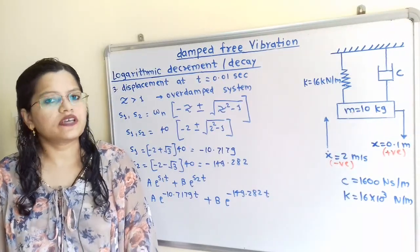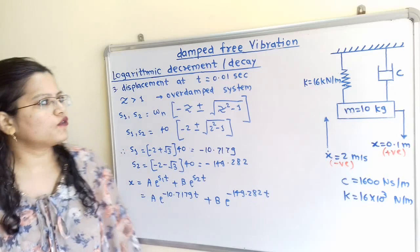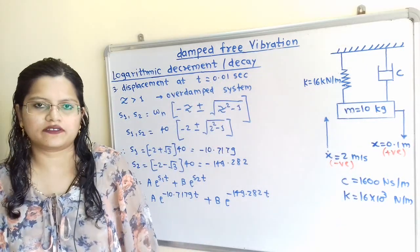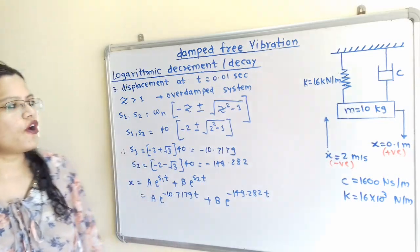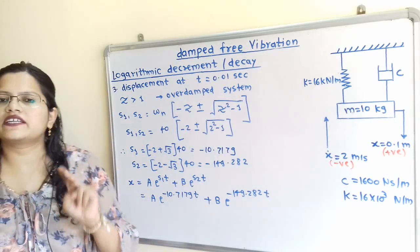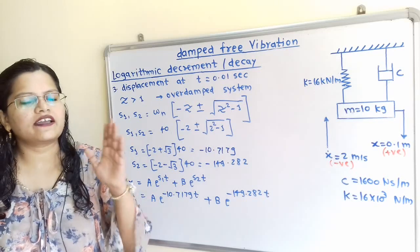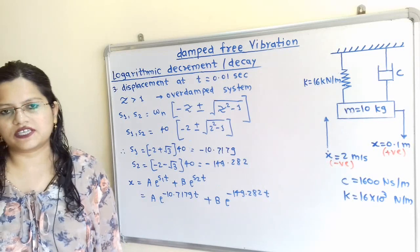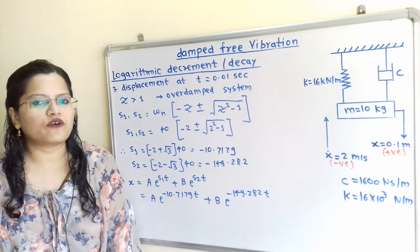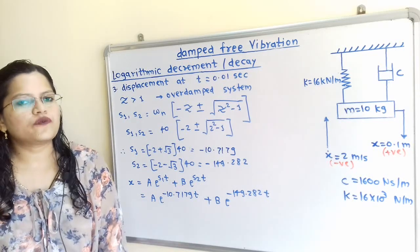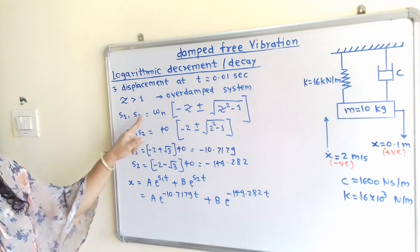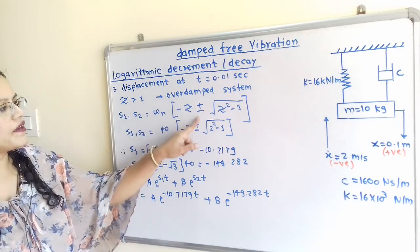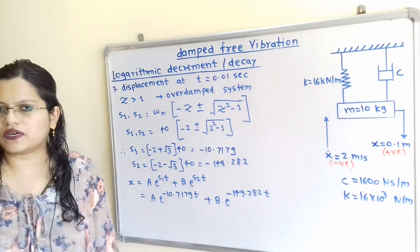Now we will move to the third question. We have to find displacement at time T equal to 0.01 second. Since the value of zeta is 2, that is zeta is greater than 1, this system is known as an over-damped system. To find the values of S1 and S2, we use the formula: S1 and S2 equal ωN times (−ζ ± √(ζ²−1)).